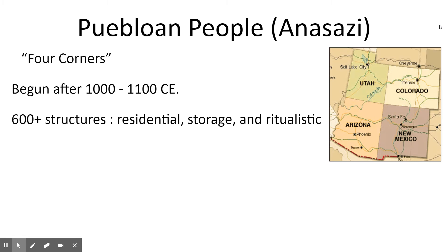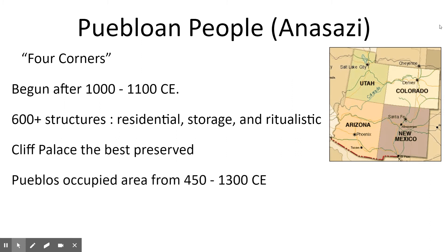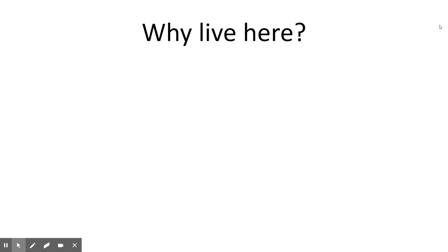In the Cliff Palace there are about 600 structures. As mentioned, they're residential and ritualistic, and there's also storage — so it really is a living and worship space. Cliff Palace is the best preserved of them. The Pueblo people have occupied the area from around 450, so even though we're focused on Cliff Palace specifically, the whole area has been occupied since around 400 CE.